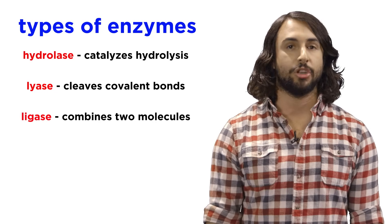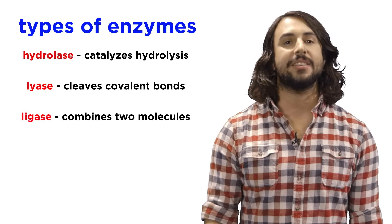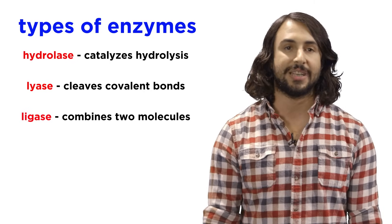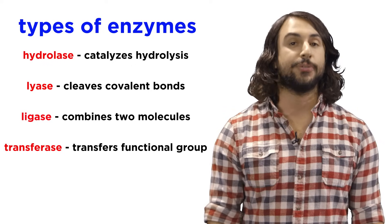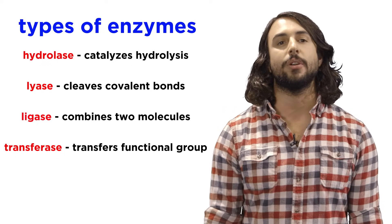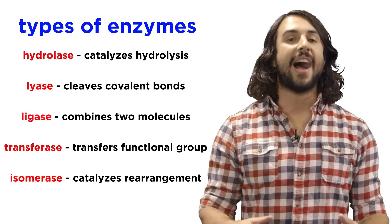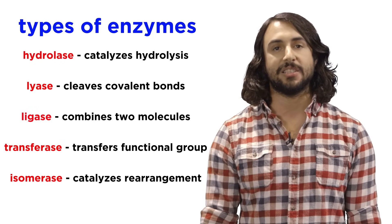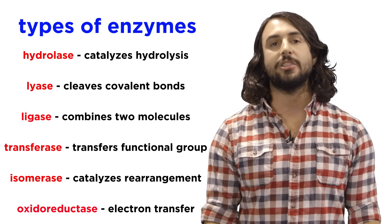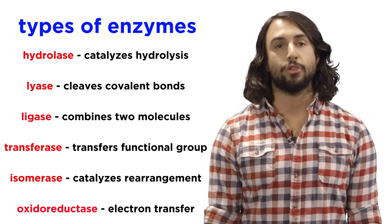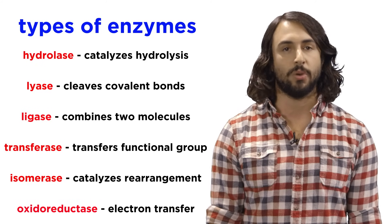An enzyme with the opposite function, a ligase, is an enzyme that joins two molecules together. A transferase is an enzyme that transfers a functional group from one molecule to another. An isomerase catalyzes a spatial rearrangement of the substrate. And an oxidoreductase is an enzyme that transfers electrons from one molecule to another.